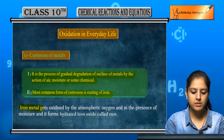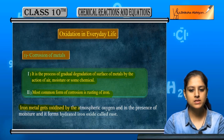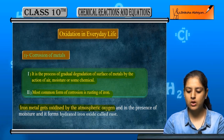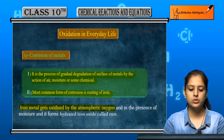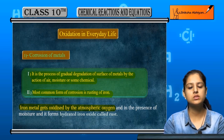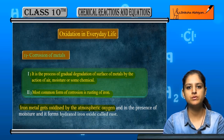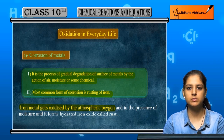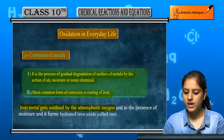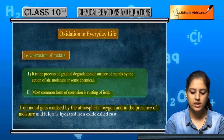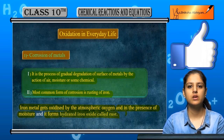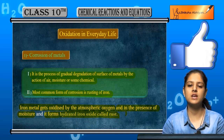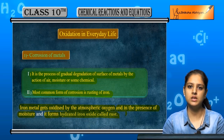If we are talking about rusting of iron — corrosion ki ho rahi hai kyunki iron jo hai wo oxidize ho raha hai atmospheric oxygen ki wajay se. Us mein oxygen add ho rahi hai, and in the presence of moisture it forms hydrated iron oxide, called rust. Us ke upar rust ki ek layer aa jaati hai.